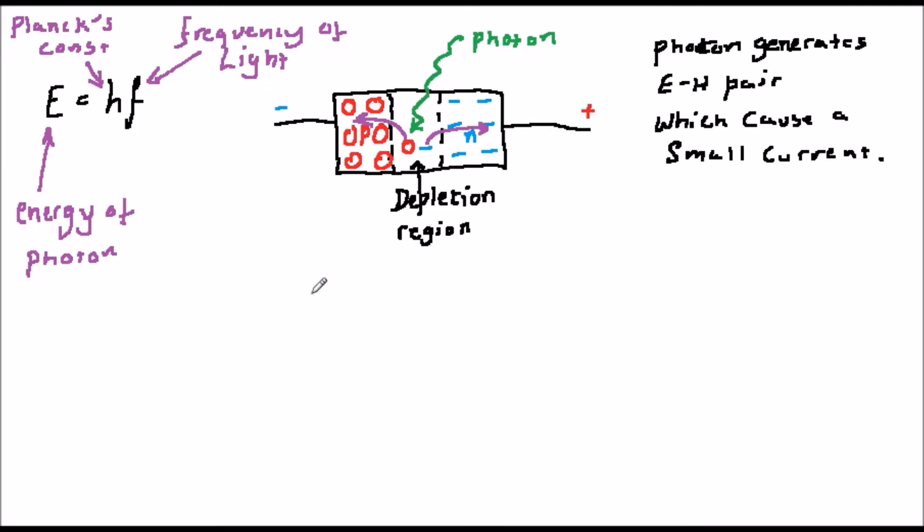Let's look now at how the incident light affects the diode characteristic. You can probably work this out for yourself pretty easily from the discussion we've just had, but the answer is shown on the screen.